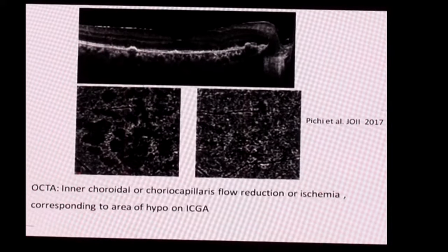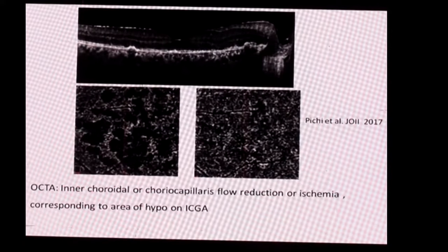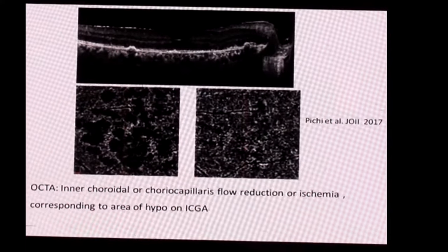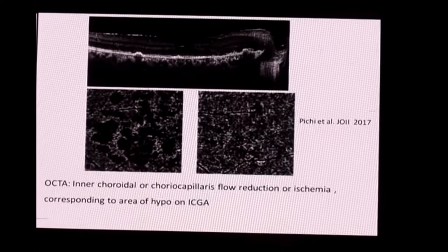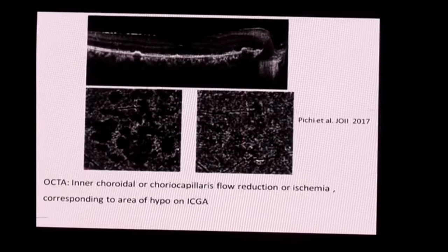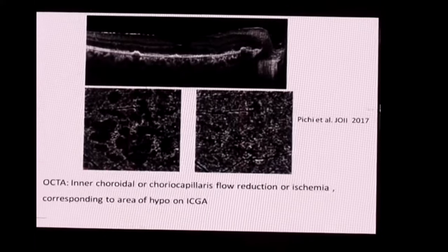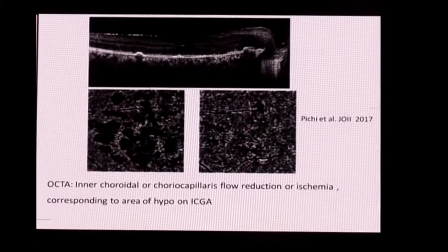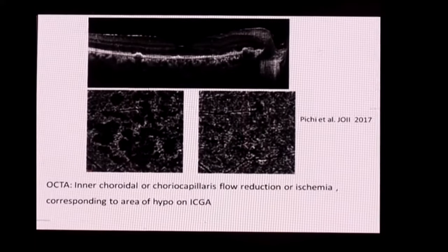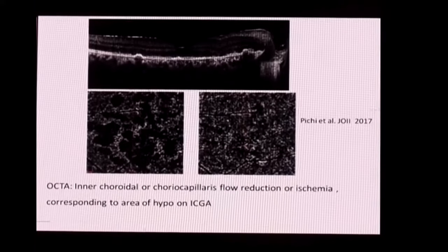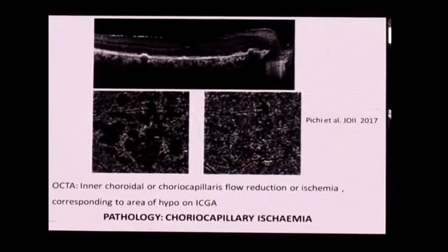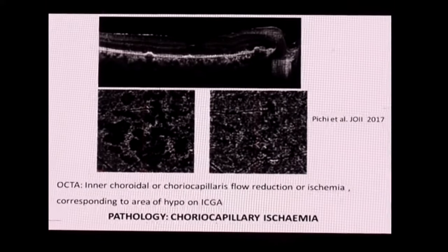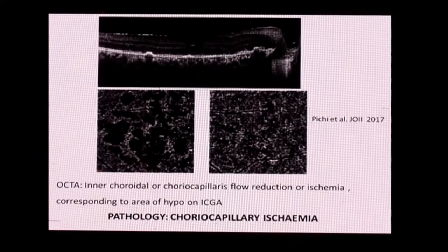When we look at the OCTA, this has changed our understanding of APMPPE. There is disruption of the outer retinal layers and retinal pigment epithelium. We initially believed APMPPE was a disease of the RPE, but OCTA now shows large choriocapillaris non-perfusion or flow reduction corresponding to ICG areas, suggesting it may be more a result of choroidal or choriocapillary ischemia.